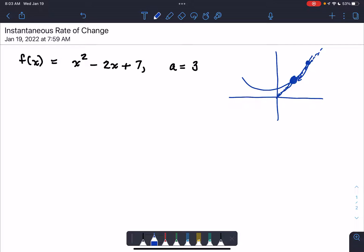So remember that the formula for the instantaneous rate of change is the limit as h approaches 0 of f of a plus h, so we're saying that this right here is a, minus f of a all over h.